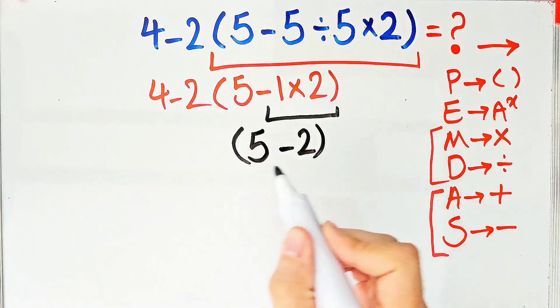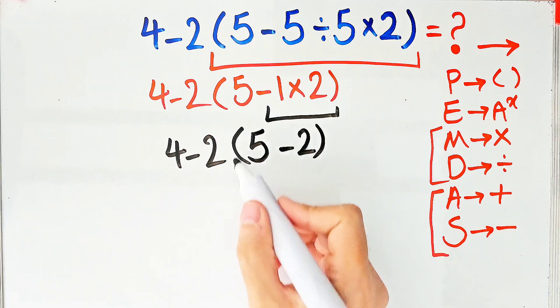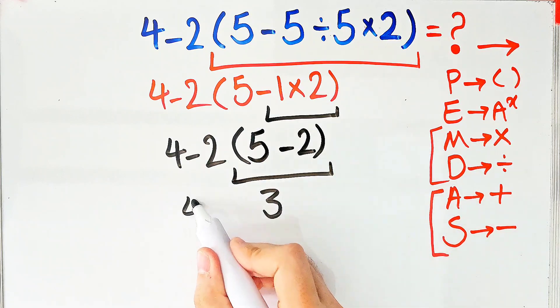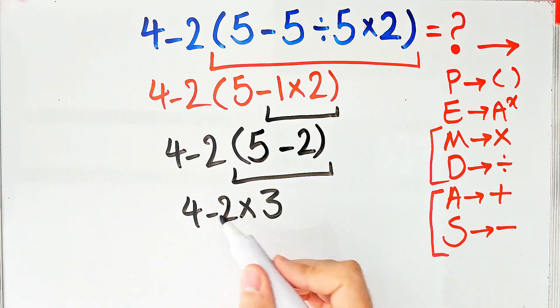The question is 4 minus 2 times 5 minus 2. 5 minus 2 equals 3. Now we have 4 minus 2 times 3. First we do this multiplication.